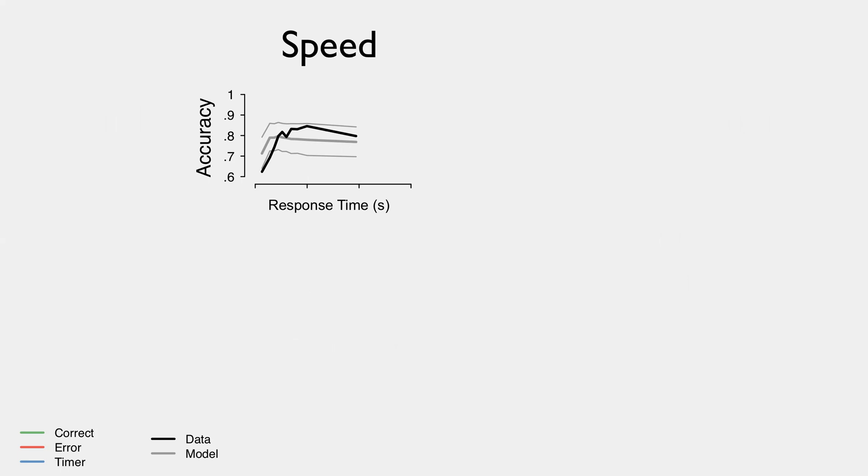And we see a traditional kind of finding here that's also been seen as some evidence for collapsing thresholds. So we see a rapid rise in accuracy across those very fast RTs, up to a peak, and then a slow decline in that conditional accuracy function. And we're seeing the model is able to capture this general trend as well.